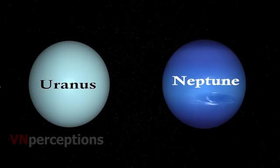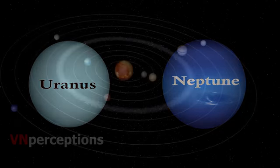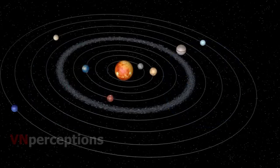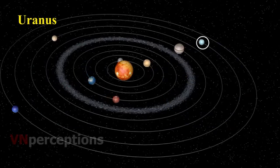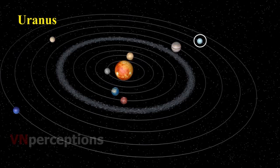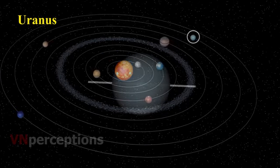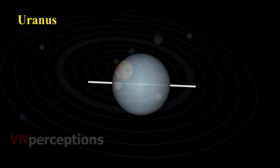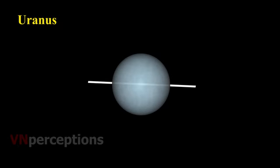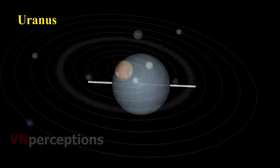Then it is Uranus and Neptune. These are the outermost planets of the solar system and they can be seen only with the help of large telescopes. Uranus is the seventh planet from the sun. Like Venus, Uranus also rotates from east to west. The most remarkable feature of Uranus is that it has a highly tilted rotational axis. As a result, its orbital motion appears to roll on its side.